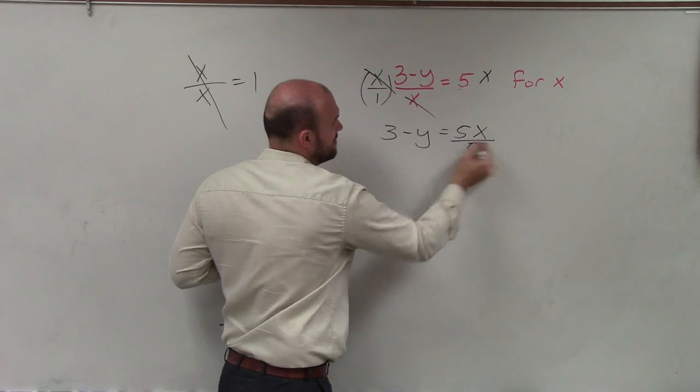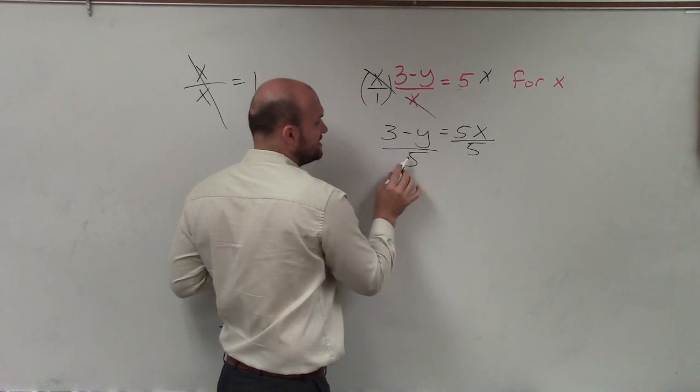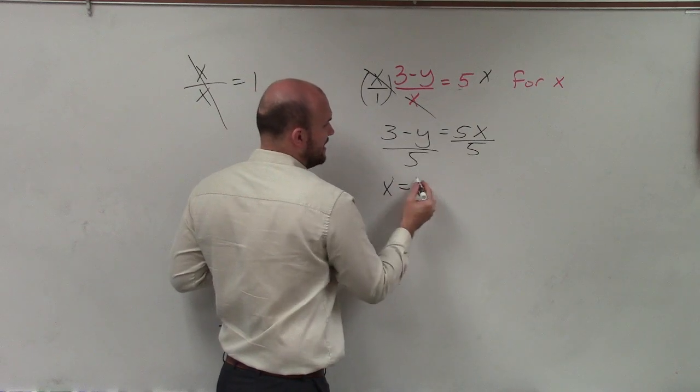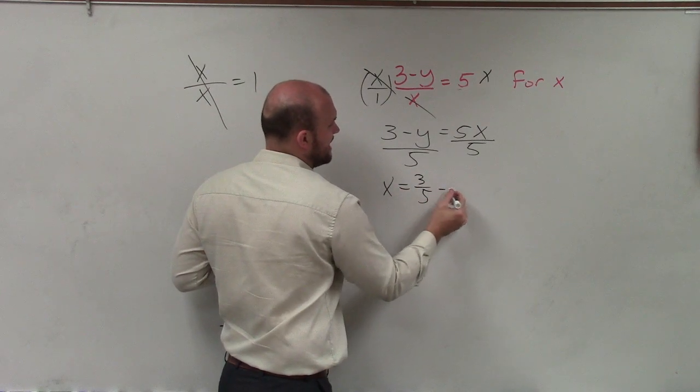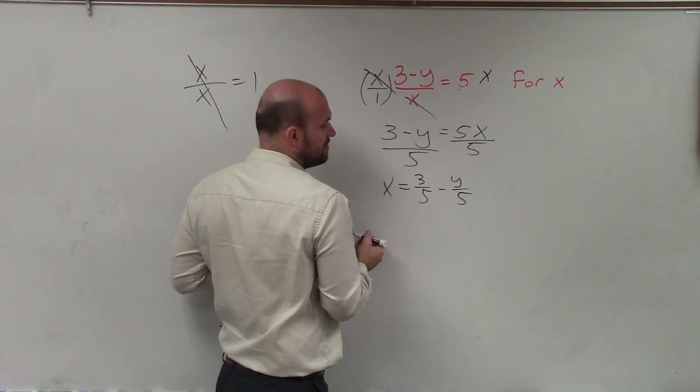And again, we need to solve for x, so I'll divide by 5 on both sides. And I have x equals. Now, I can divide this 5 into both of these, and that would be 3 fifths minus y over 5.